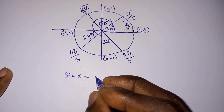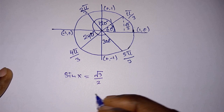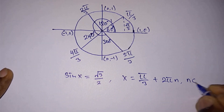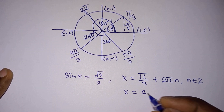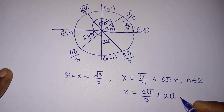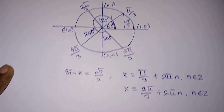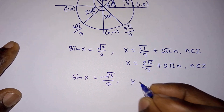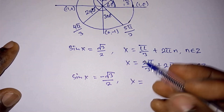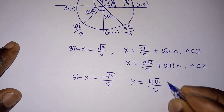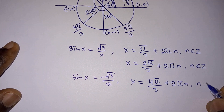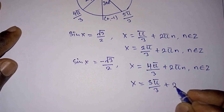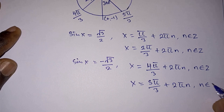So when sine x equals positive root 3 over 2: x equals pi/3 + 2πn and x equals 2pi/3 + 2πn. When sine x equals negative root 3 over 2: x equals 4pi/3 + 2πn and x equals 5pi/3 + 2πn, where n is an integer in each case.